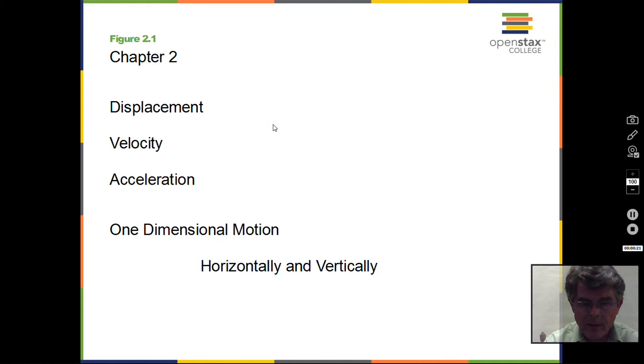Velocity, a rate of change of position in meters per second and a direction, and acceleration, a rate of change of the velocity in a direction. We'll consider one-dimensional motion in both horizontal and vertical motions before we're done with this chapter.